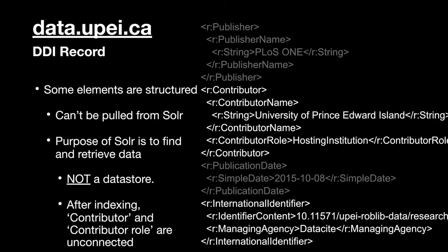DDI records — the important thing to note is some elements are similar to MODS, and some structured elements can't be extracted in a simple way using Solr. The purpose of Solr is to find and retrieve data based on a search for a string — it is not a data store. I always want to repeat that to people because when people start to learn Solr, they get big ambitions but sometimes use it for things it's not suited for. Specifically, it is not a NoSQL database. After indexing, for example, contributor and contributor role — which are stored together in one element — when you index them into Solr, they're just two separate floating entities, which is perfectly adequate for text search, but doesn't group them in a logical way when you're trying to migrate the data.